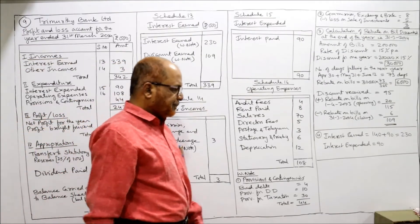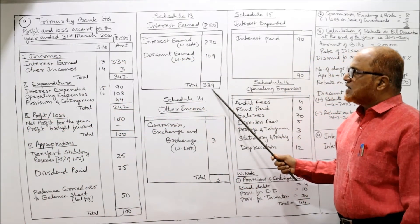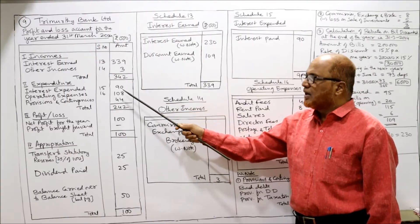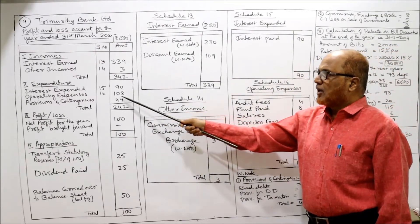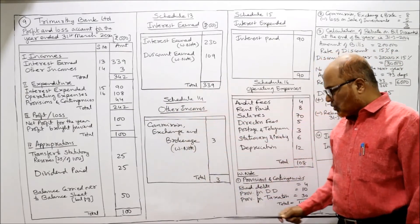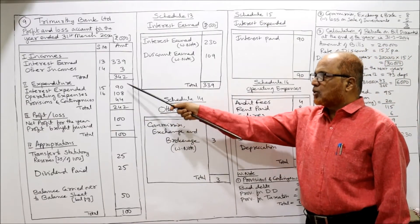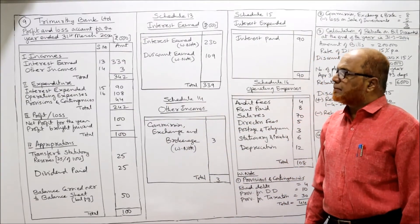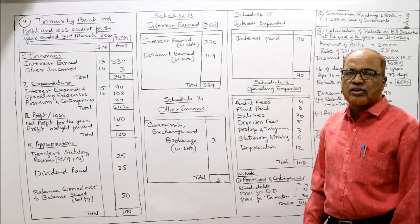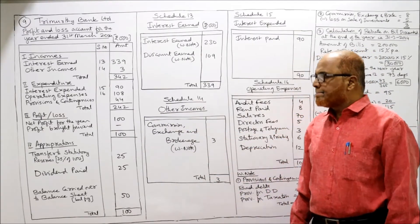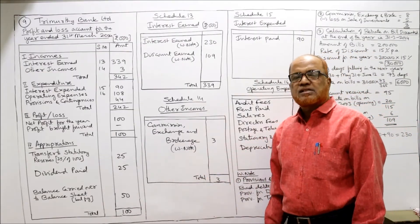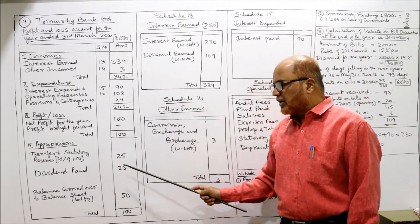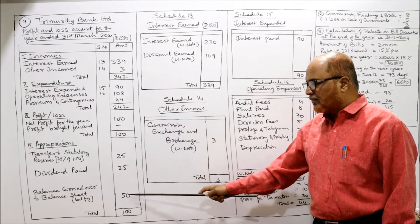Take the total of each schedule and put those totals in the profit and loss account. Schedule 13 total is 339, schedule 14 total is 3, total income 342. Expenditure: schedule 15 interest expended 90, schedule 16 operating expenses 108, provisions and contingencies 44 — total expenditure 242. So 342 minus 242 gives a net profit of 100. No profit brought forward, so total is 100. Transfer 25% to statutory reserve = 25. Dividend paid 25. Remaining balance carried over to balance sheet is 50.